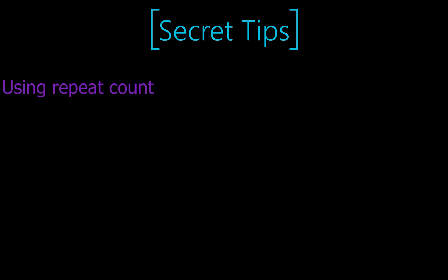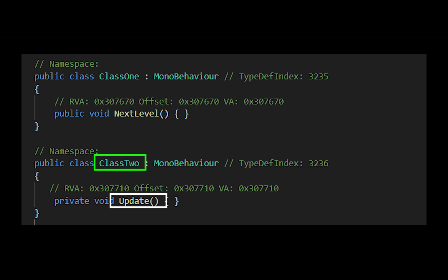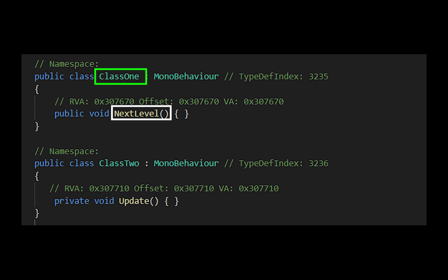The second tip: if you are trying to hook a method, the target offset should also be from the same class. If the update offset is in a different class and the void function you want to hook is in another class, it will not work — they both must be in the same class.